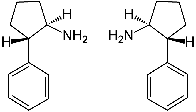(1R,2S) trans-2-phenylcyclopentan-1-amine and (1S,2R) trans-2-phenylcyclopentan-1-amine form one enantiomeric pair. (1S,2R) trans-2-phenylcyclopentan-1-amine is the active ingredient of cypnamine.